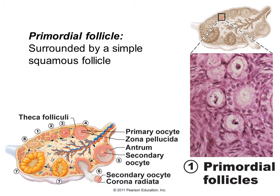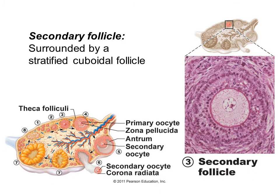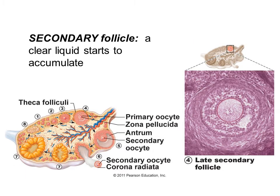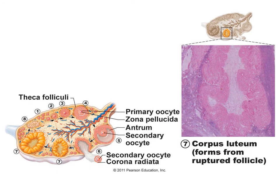The primordial follicle is simply the oocyte surrounded by a single layer of squamous cells. In the primary follicle, those become simple cuboidal follicle cells. In the secondary follicle, there are now stratified multilayers of cuboidal cells, so it's getting larger. Then fluid begins to accumulate. In the vesicular follicle, there is a large amount of fluid surrounding the oocyte, just prior to ovulation. After ovulation, the corpus luteum is what remains of the ruptured follicle.